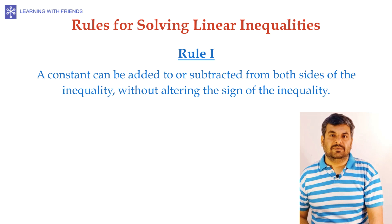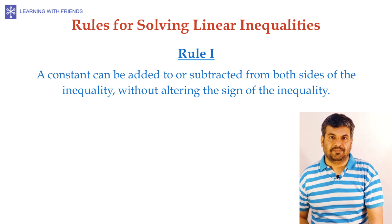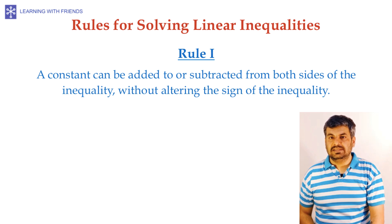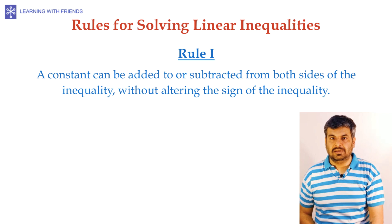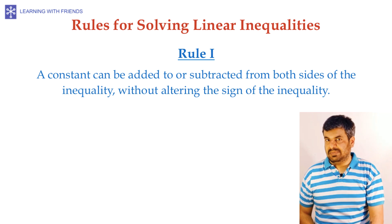Let's look at the rules for solving linear inequalities. The first rule, a constant can be added or subtracted from both sides of the inequality without altering the sign of the inequality. What exactly do we mean by that?